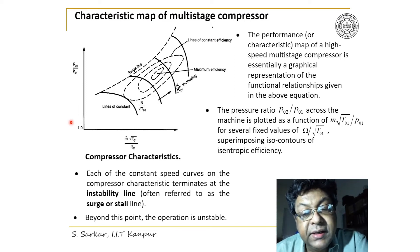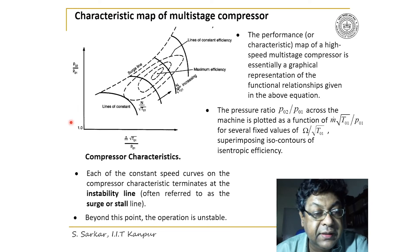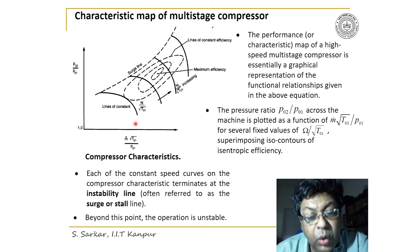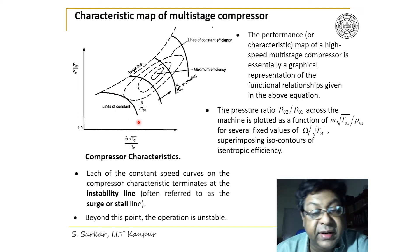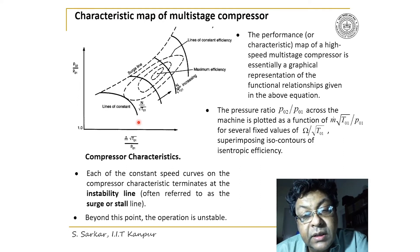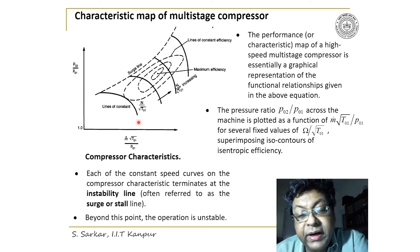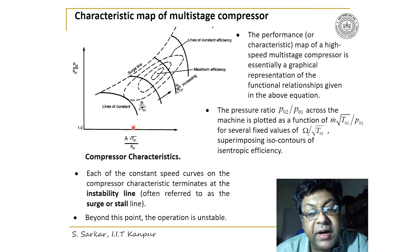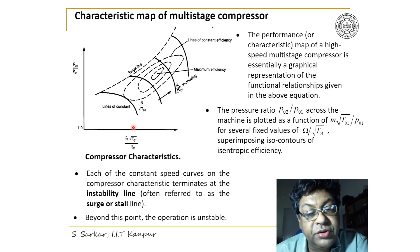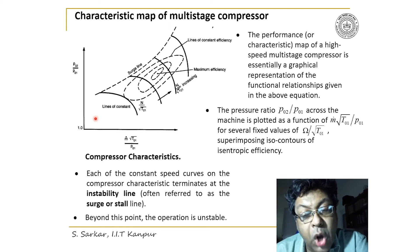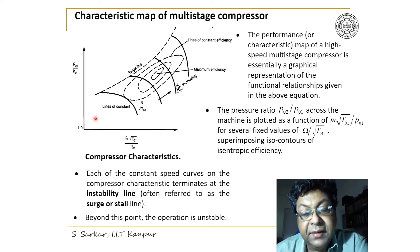Another important point: at low pressure and high mass flow, the characteristic curve becomes vertical, meaning no further increase in mass flow is possible even if pressure is changed. At this condition, the Mach number across a section of the machine reaches unity and the flow is choked. A discussion on stall and surge will be made later.